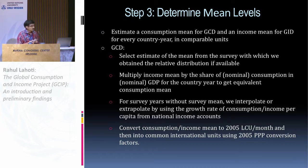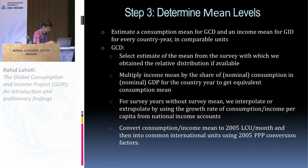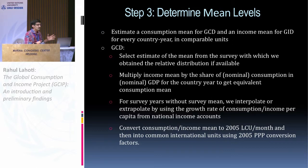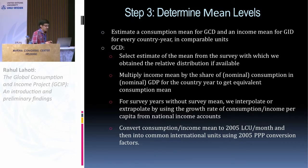In the third step, we determine the mean levels. We use survey means — we do not use national account means. We get the means data from the surveys where we are getting the relative distributions. If the mean is an income mean, we convert it into a consumption mean by using the consumption-to-nominal-GDP ratio to get an equivalent consumption mean; this is the same method followed in earlier versions of similar work. For survey years without survey means, we do interpolation or extrapolation using growth rate data.